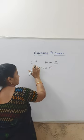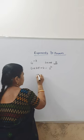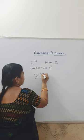Now, let us substitute 2 square in the place of 4. So, 2 square whole to the power minus 3.